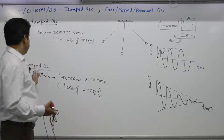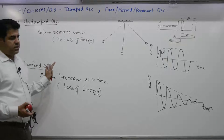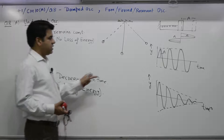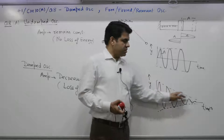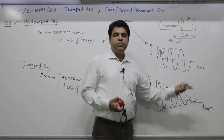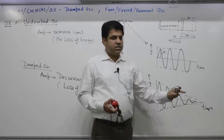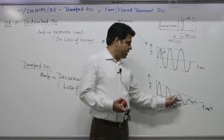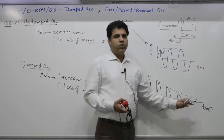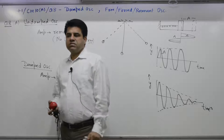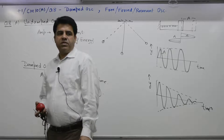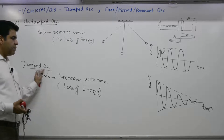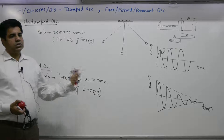In a damped oscillation, amplitude decreases with time. In practical cases, amplitude goes from 10 to 8, 5, 2, 1 — it decreases over time. Such an oscillation is known as damped oscillation.